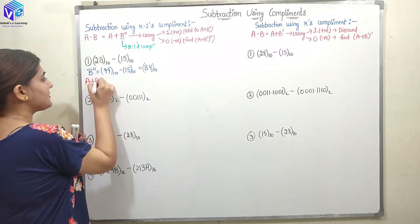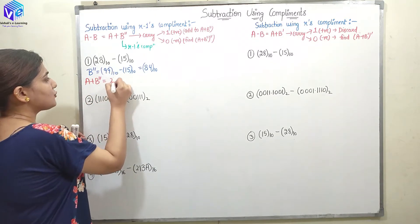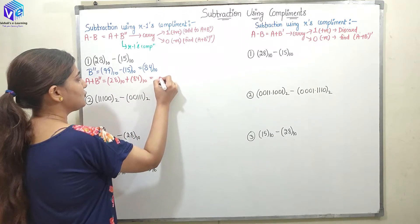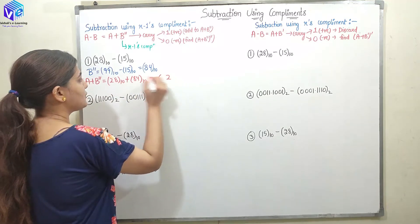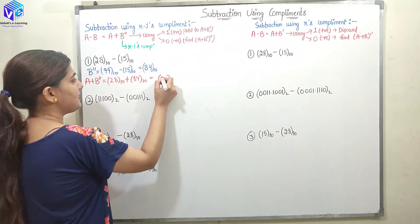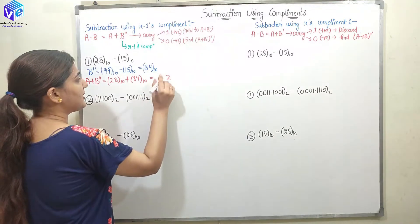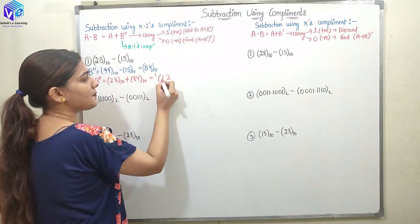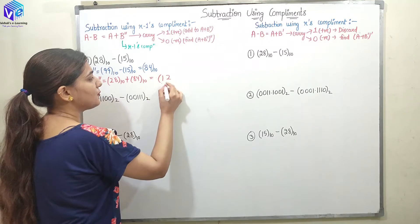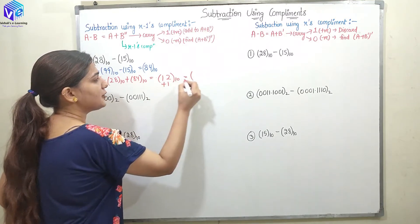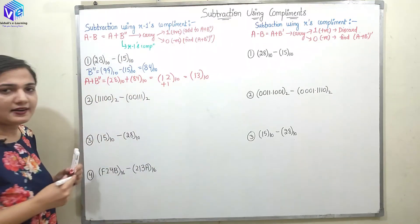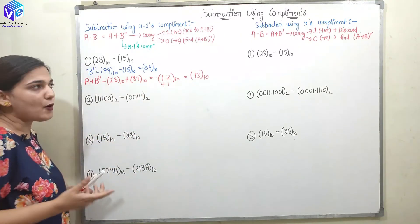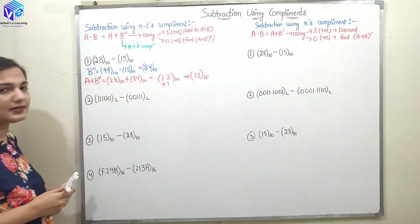Now I have to find out A plus B double dash. A is 28 base 10 plus 84 base 10. When you add these two: 8 plus 4 is 2 with carry 1, and 8 plus 2 is 10 plus 1 carry gives us 1 — so we get 112 with 1 as the carry. When 1 is the carry, we know this is a positive number and we have to add this 1 to 12 to get the output. The answer is 12 plus 1, that is 13 base 10. This is the output, which is positive in nature.